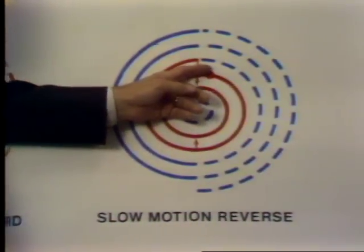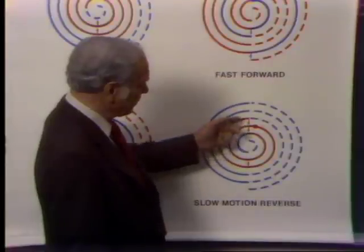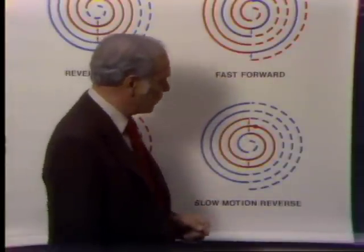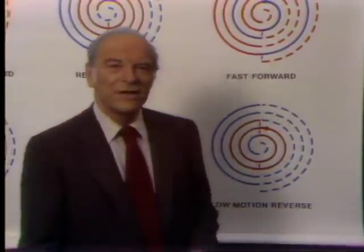Slow motion reverse is the same principle, except the picture jumps back one track. A unique feature of the Pioneer LaserDisc player is random access, which lets you search out any frame on the disk. Each frame is coded with a five-digit number, and as the disk spins, the laser beam jumps from track to track and reads the code. You can find any frame on a half-hour disk in less than 20 seconds.